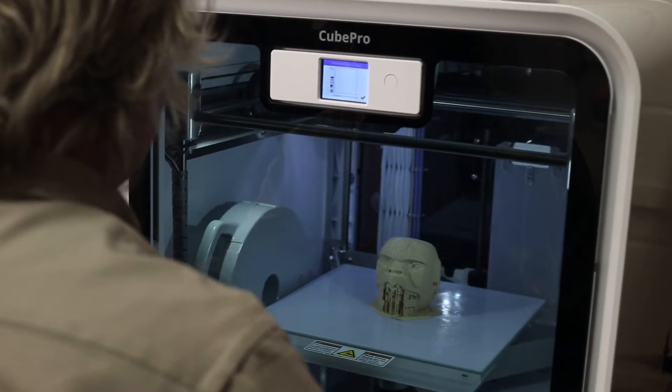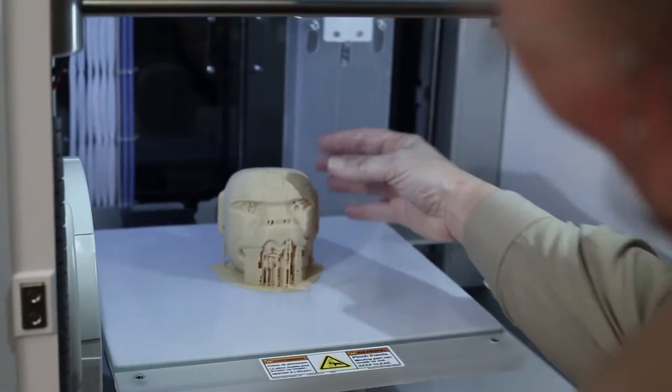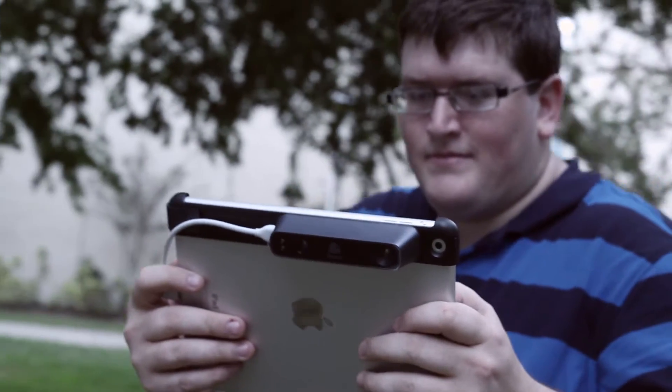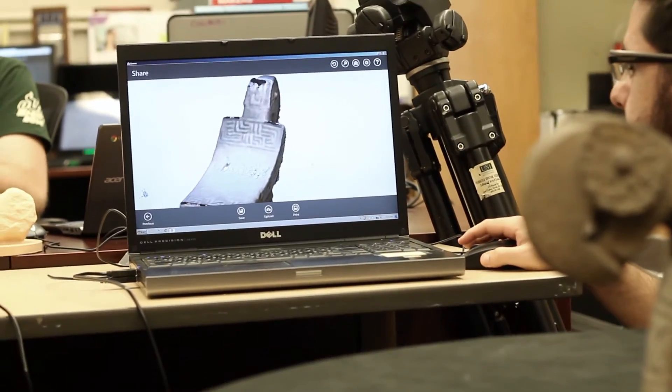Out of the box, the Cube Pro is easy to use. When you combine that with some reality capture techniques like the iSense, you're actually able to capture reality from objects around you.